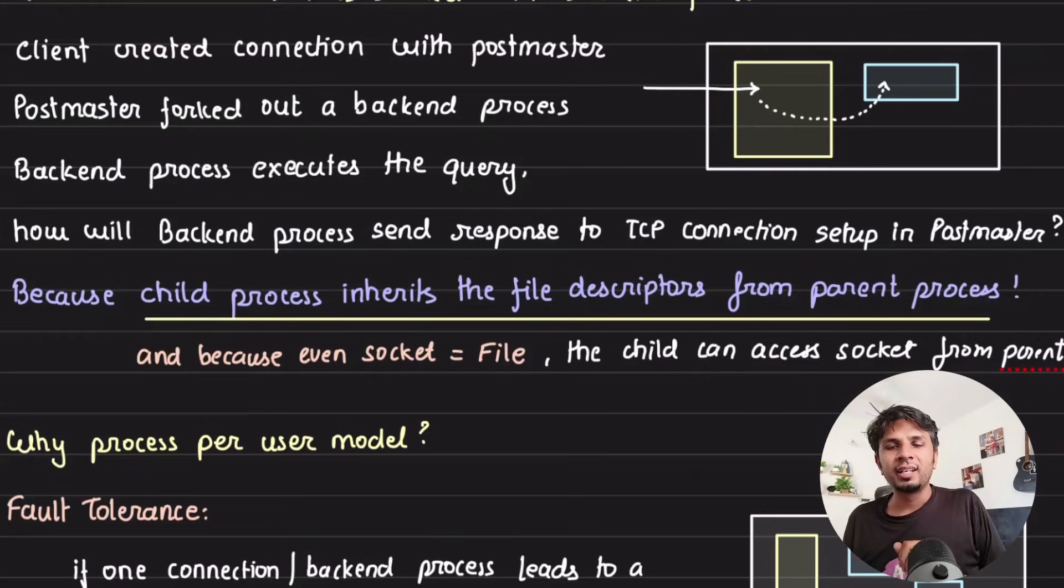So Postgres makes a conscious effort that once the backend process is handed off, the postmaster process does nothing with respect to this connection. Everything is handed off to the child process. The backend process is the one that is firing a read system call, write system call, close system call on that, to whatever it wants to do on that connection and obviously executing the query and whatnot.